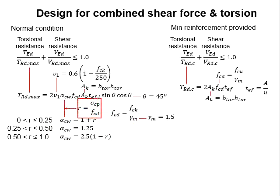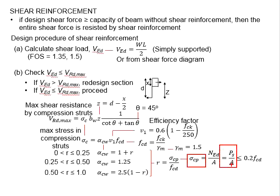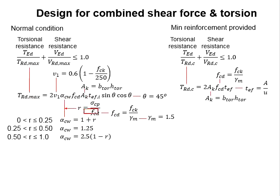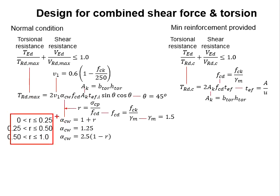As presented in this slide, you need to determine r to find alpha_cw. The value r is calculated from sigma_cp, which is the compressive stress caused by the prestressing tendon — obtained by dividing the prestressing force by the cross-sectional area. Next, determine the design strength of the concrete by dividing fck by the partial factor of 1.5. Find the value of r, identify which range it falls in, and define alpha_cw accordingly. Then determine fcd.